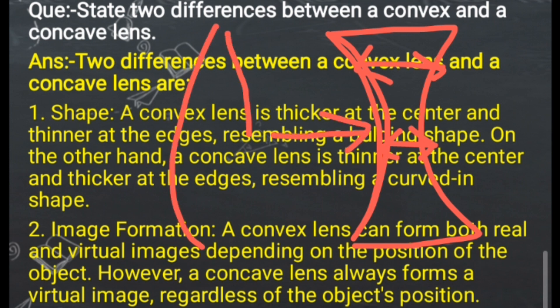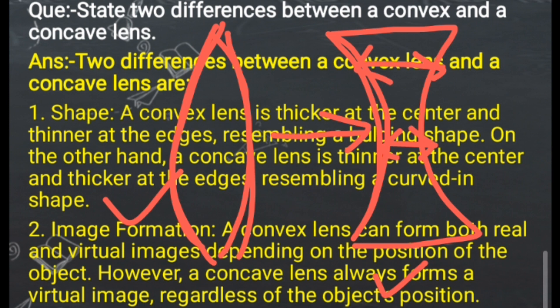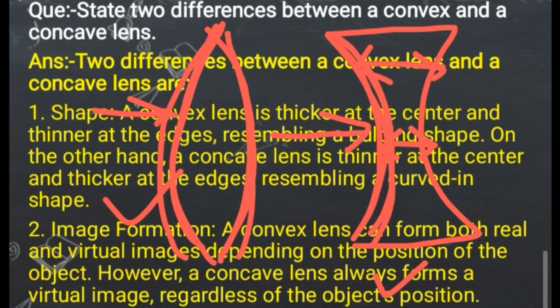In the case of convex lens, the surface is bulging out. But this lens, which we call the concave lens — this surface is the curved inward surface.